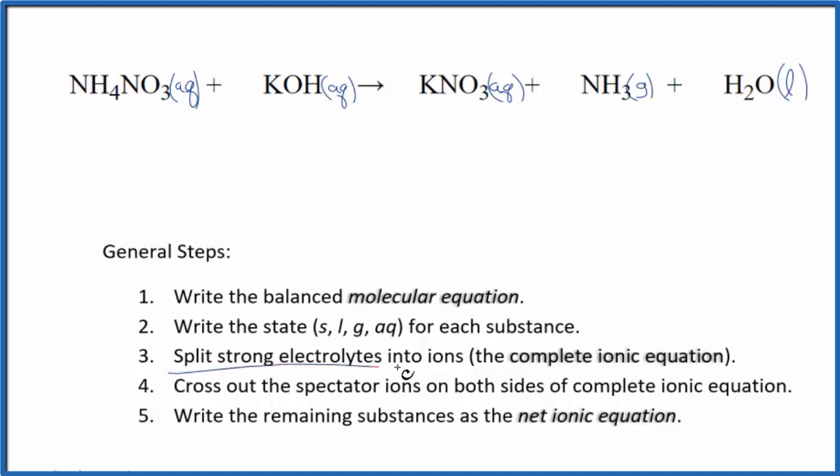Now, we can split the strong electrolytes into their ions. That'll give us the complete ionic equation. This ammonium ion, the whole thing, has a 1 plus ionic charge. Good one to remember. So we have our ammonium ion, and I won't write the states now. Let's write those at the end. And then the whole nitrate ion is 1 minus. So we have NO3 minus.